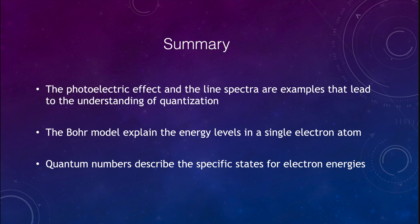Let's finish with our summary. We looked at the photoelectric effect and the line spectra as examples that help us understand the idea of quantization. We looked at the Bohr model to explain the energy levels in a single electron atom like hydrogen. Those quantum numbers describe the specific states for those electron energies. That concludes this lecture on quantization and the Bohr model. We'll be back again next time for another topic in physical science. So until then, have a great day everyone, and I will see you in class.